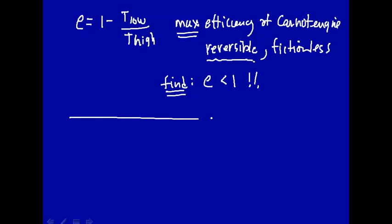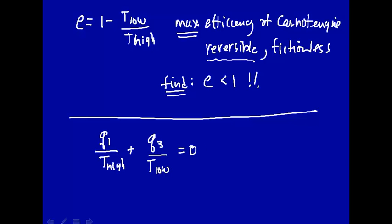Just summarizing the previous lecture, we had heat transferred in from the high-temperature reservoir divided by that temperature, plus the heat transferred out of the engine divided by the low-temperature reservoir, that was equal to 0. This implies that some function called Q over T is a state function. Remember the Carnot cycle: you go from some initial state through various intermediate states but end up back at the same initial state. If you go through that cycle and get 0 for some quantity you're adding up, that quantity is a state function.